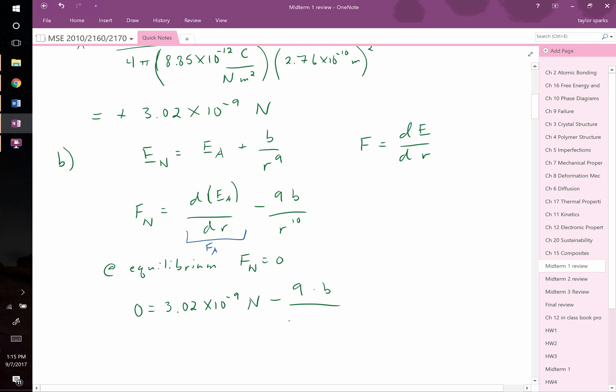Again, this is our separation distance, 2.76 times 10 to the negative 10 meters. This is raised to the 10th power, right? We can go ahead and bring one of these to the other side, and then multiply both sides by 2.76 times 10 to the negative 10 meters. And this will allow us to solve, well, let's just write it out.